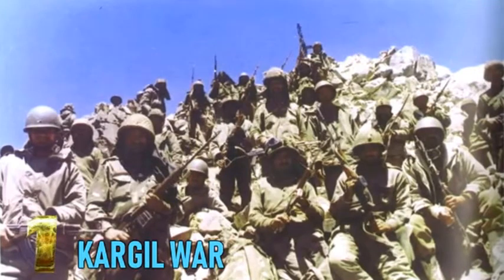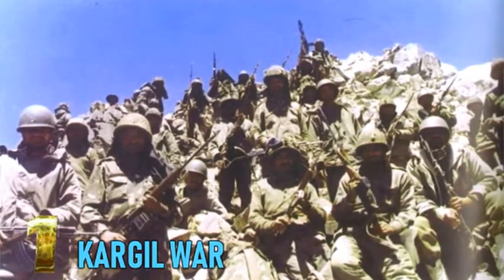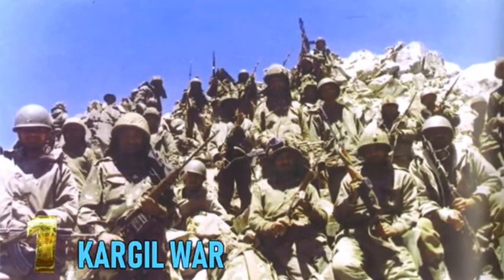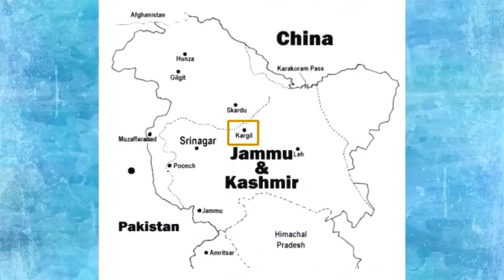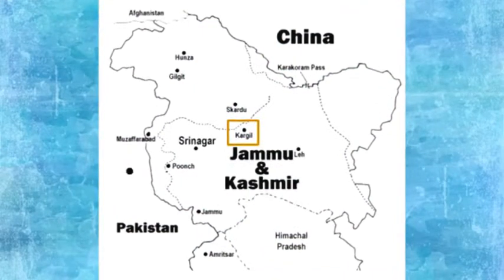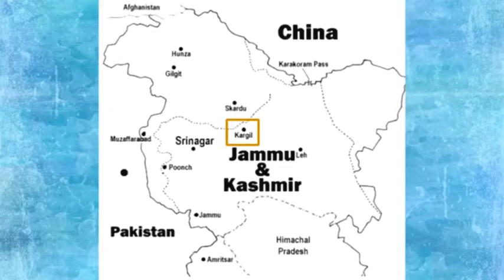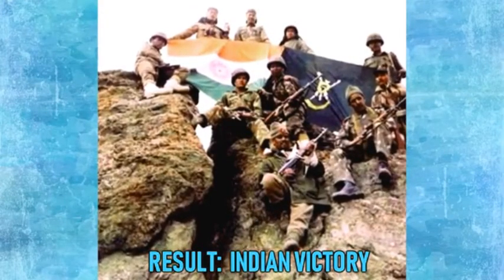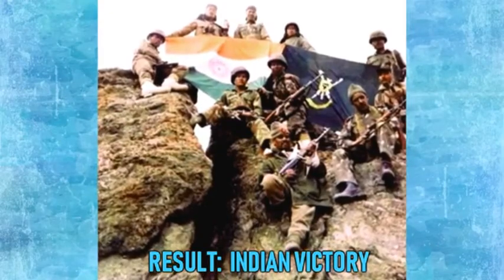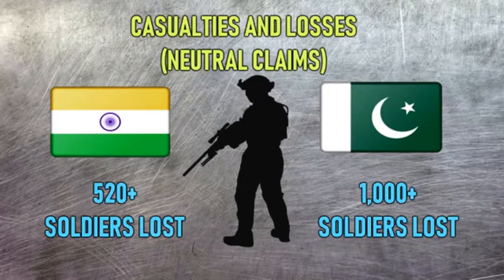The Kargil War, also known as the Kargil Conflict, was an armed conflict between India and Pakistan that took place between May and July 1999 in the Kargil district of Kashmir and elsewhere along the Line of Control. The cause of the war was the infiltration of Pakistani soldiers disguised as Kashmiri militants into positions on the Indian side of the LOC. Result: decisive Indian victory. Casualties: India lost 520-plus soldiers killed; Pakistan lost 1,000-plus soldiers killed.